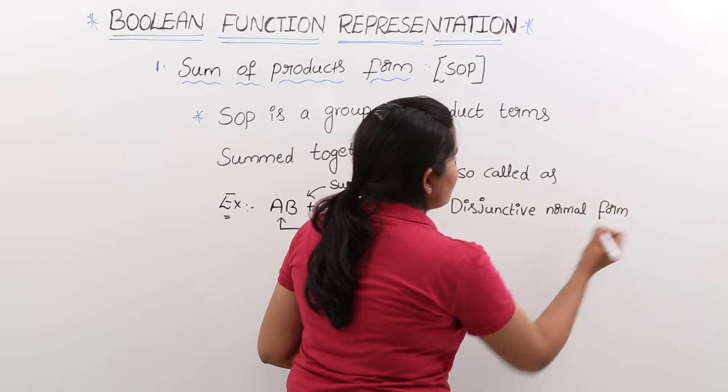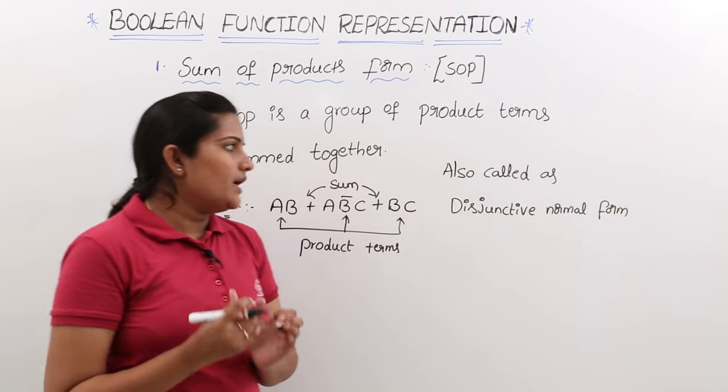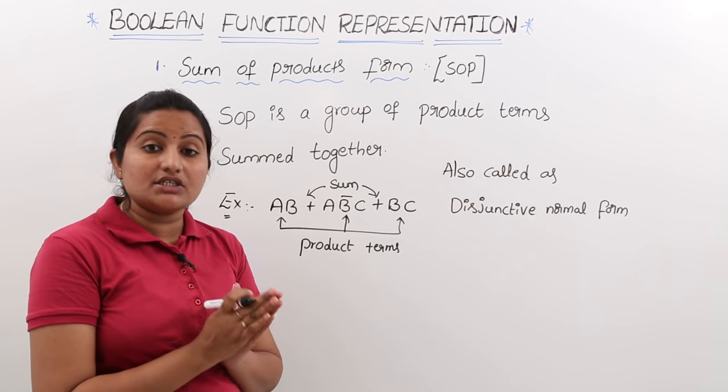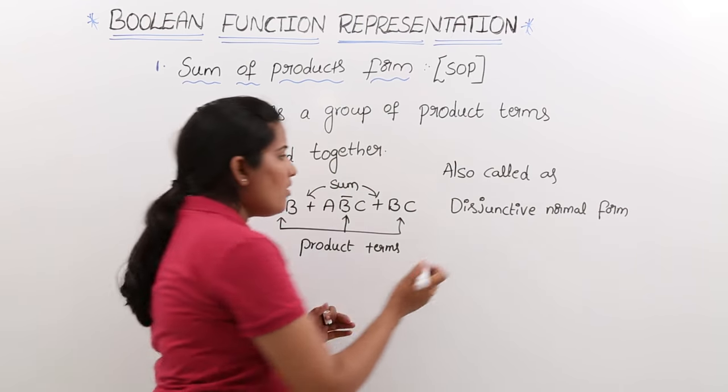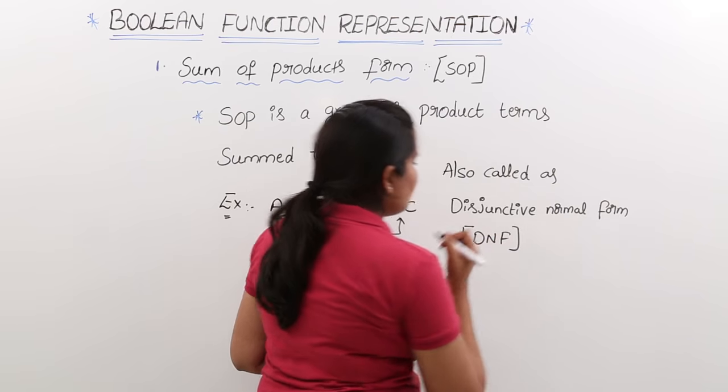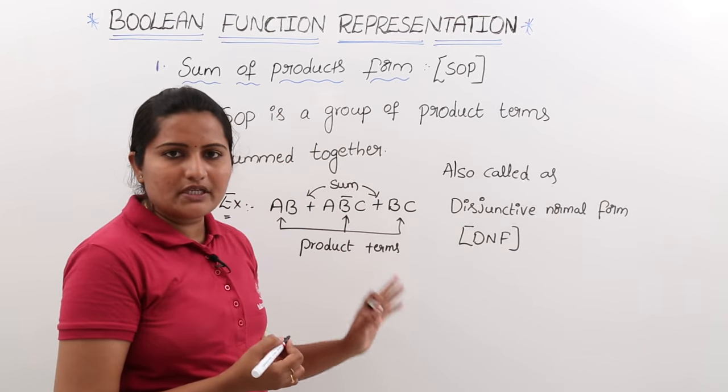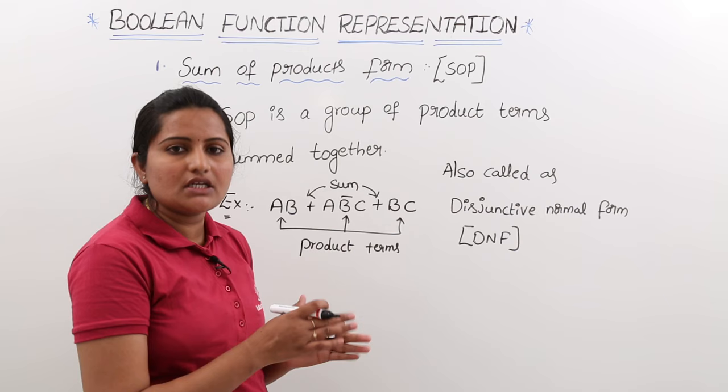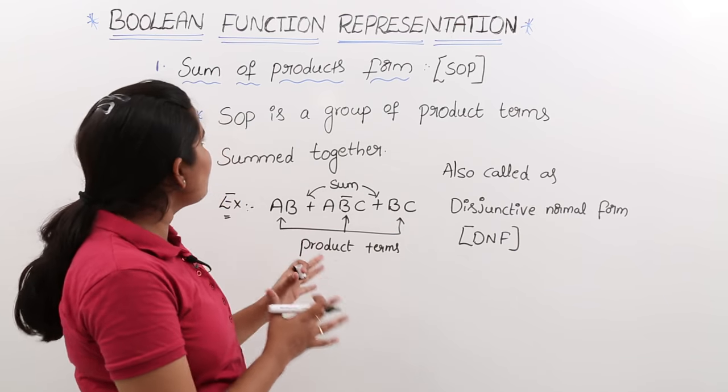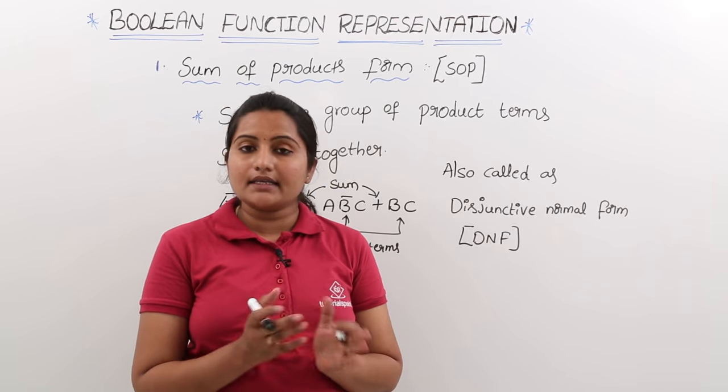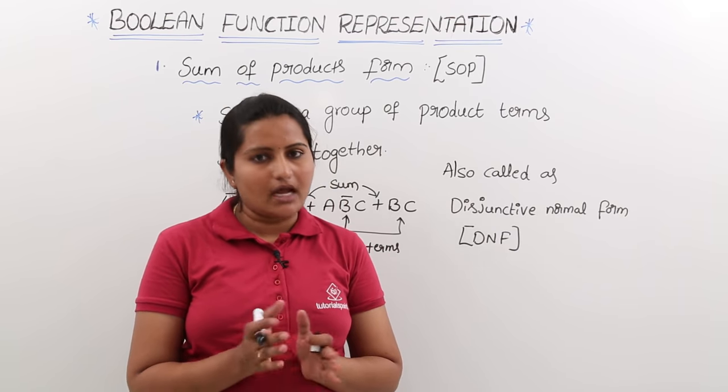For example, in exams, if anyone tells you the given expression is in disjunctive normal form or DNF, this also represents SOP. That means they are saying the expression is in SOP. This is about sum of products form, and in next classes we will discuss other forms.